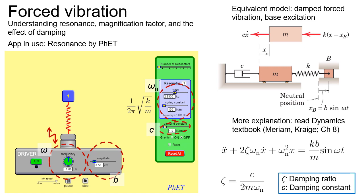The concept of base excitation is that the base, instead of the mass, is being oscillated. So the driving force is given to the base, which eventually makes the mass oscillate. You can find more explanation about base excitation in the textbook Dynamics by Meriam and Kraige, Chapter 8. From that, we can derive the equation of motion for base excitation.